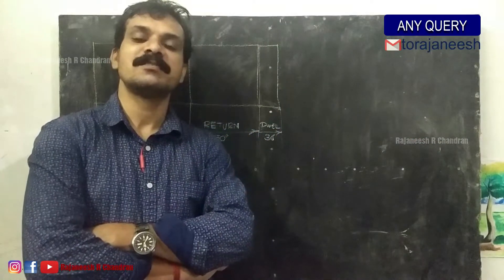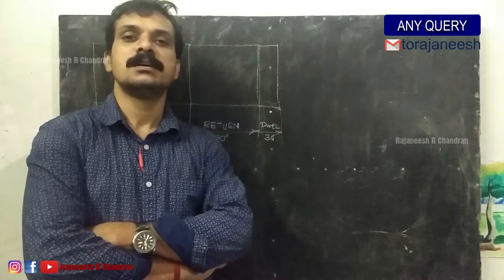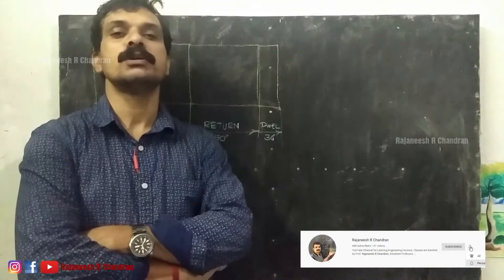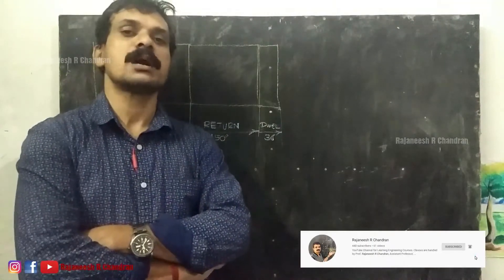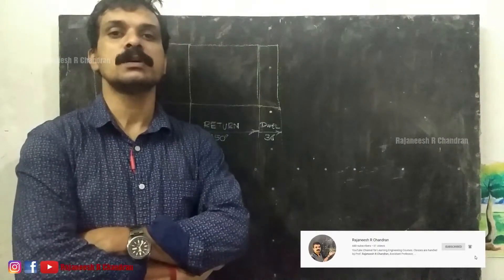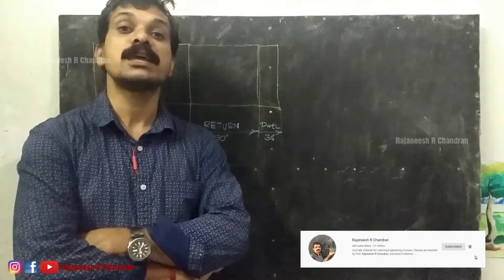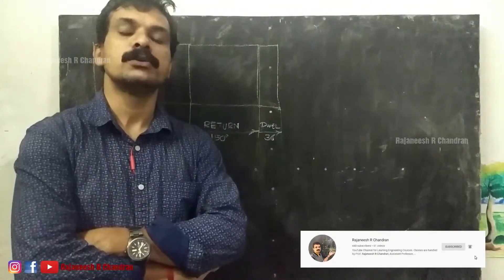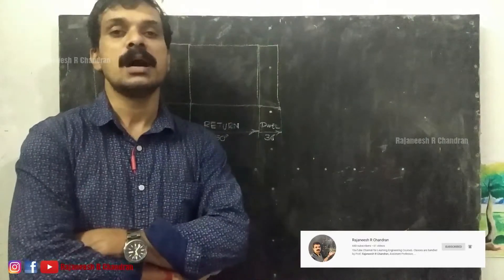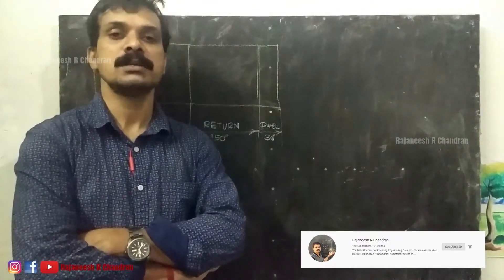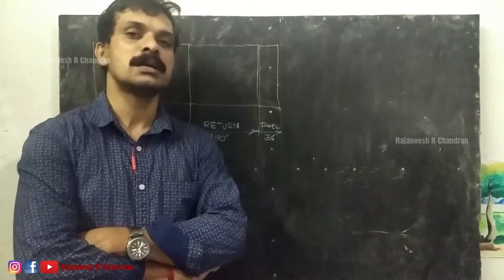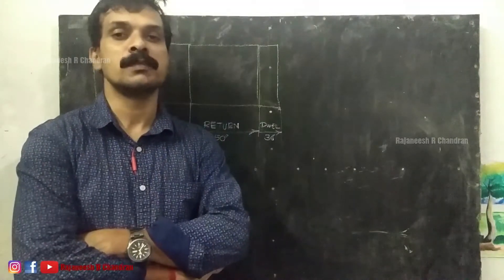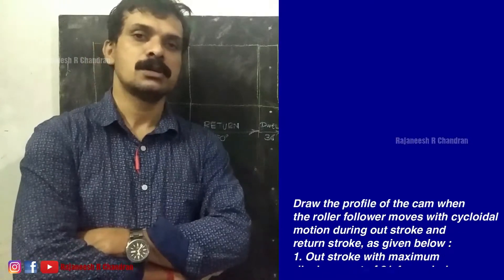Hello friends, I am Rejanesha Chandran. Welcome back to my channel where we are going to study about the mechanics of machinery. In this particular video we are going to study about the construction of cam profile when a roller follower is moving with a cycloidal motion. In previous videos we studied about uniform velocity, simple harmonic motion, and uniform acceleration and retardation motion.